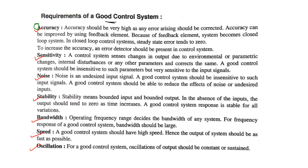First one is accuracy. Accuracy should be very high — any error arising should be corrected. Accuracy can be improved by using a feedback element, because of which the system becomes a closed-loop system. In a closed-loop control system, the steady-state error tends to zero to increase accuracy. An error detector should be present in the control system so that we can get a stable response, and the accuracy of the control system is maximized by using the error detector.